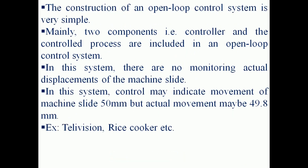The construction of an open loop control system is very simple. Whatever the input we give, the output is produced directly. That is why the construction is very simple. Mainly two components — the controller and the controlled process — are included in an open loop control system. In this system, there is no monitoring of the actual displacements of the machine slide; those movements are not monitored.